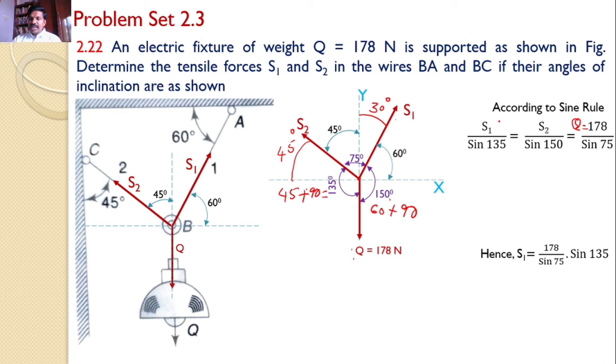Now I can use these equations. S1 equals 178 by sin 75 times sin 135, which gives the value of 130.3 Newtons. That is the answer, the tension force in the string AB is 130.3 Newtons.